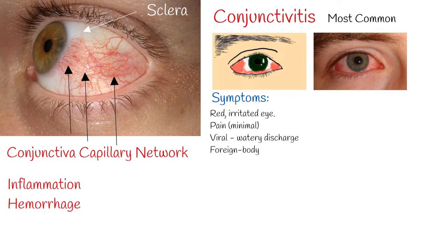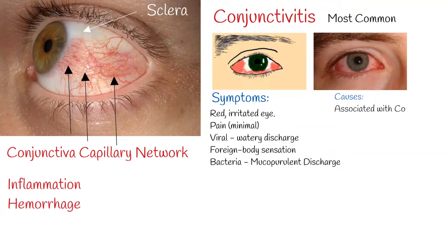If conjunctivitis is caused by bacteria, discharge is mucopurulent. Photophobia also can be presented. The viral infection may be associated with other symptoms of a common cold. Both viral and bacterial cases are easily spread between people. The most common cause of conjunctivitis is a viral infection, especially adenovirus.